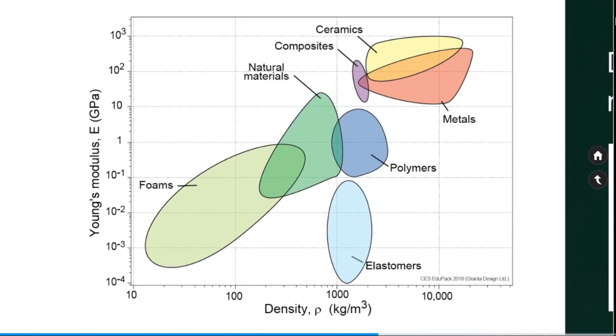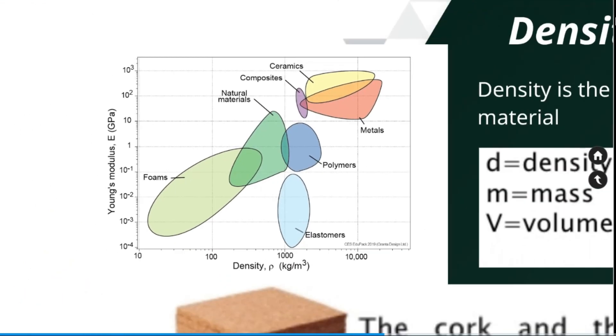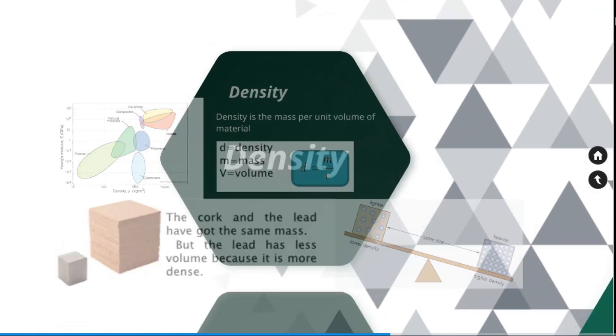This chart shows the density of multiple materials. Metals and ceramics has higher density. Next conductivity.